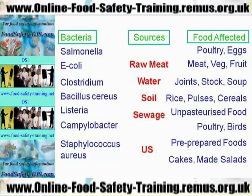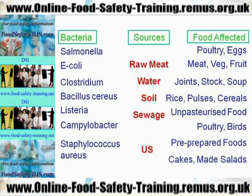E. coli tends to be found in meat, vegetables, and fruit. With meat, it's found because in insanitary conditions in abattoirs, faecal and intestinal spillage goes onto the clean meat, which is then sent to butchers and supermarkets. With vegetables, soil contamination carries e. coli — so if using vegetables raw, make sure you wash them well. If the vegetable is going to be cooked, that's not a problem because cooking will kill the bacteria.